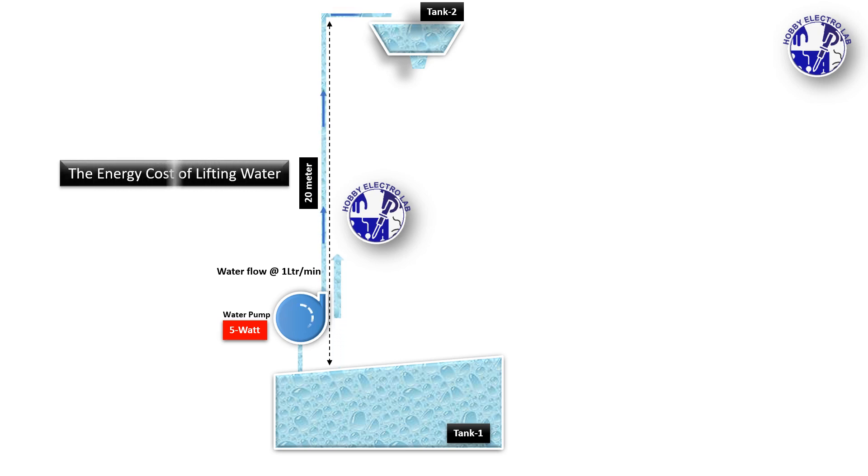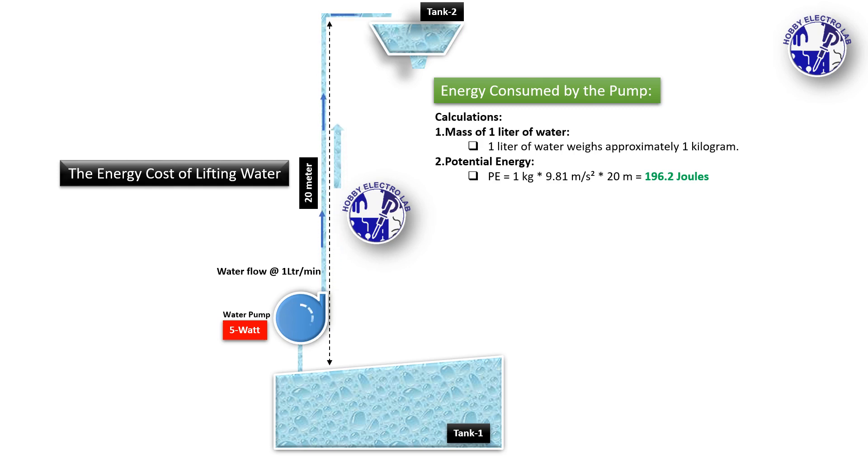How much energy will the pump consume? In an ideal scenario with 100% efficiency, the water pump would consume approximately 196.2 joules of energy to pump 1 liter of water to a height of 20 meters.